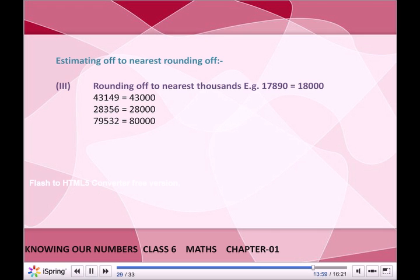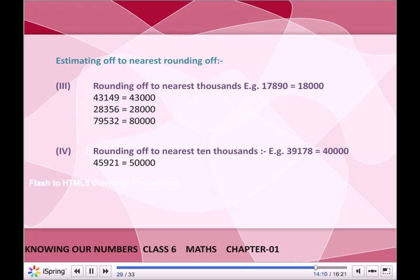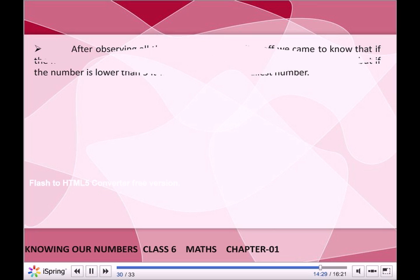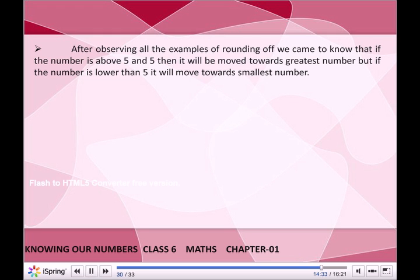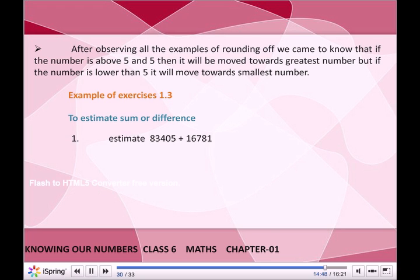Rounding off to the nearest 10,000: 39,178 → 40,000; 45,921 → 50,000; 81,591 → 80,000; 67,892 → 70,000. After observing all examples of rounding off, we know that if the digit is 5 or above, it moves towards the greatest number; if below 5, it moves towards the smallest number.